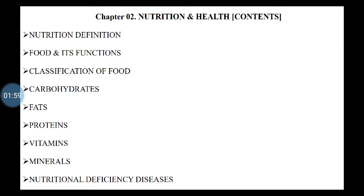In this chapter, the contents are: first, the definition of the term nutrition; then we will see what is food, what are the functions, then classification of food, and then regarding each nutrient. In relation to health, in biochemistry and clinical pathology you also study carbohydrates, fats, proteins, vitamins, and minerals for their biochemical role in the body. But here, as a nutrient, we will study what role these nutrients play, what is their definition, what are their sources, their functions, and nutritional deficiency diseases.